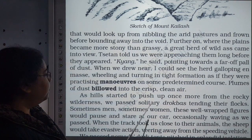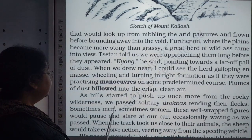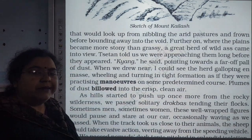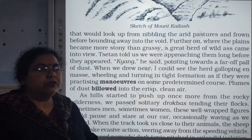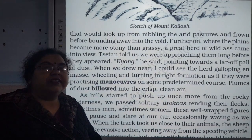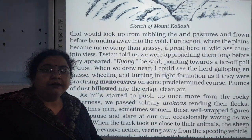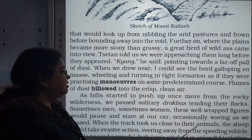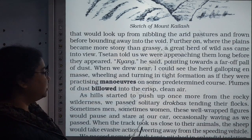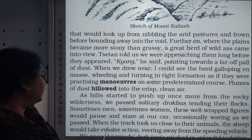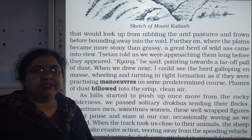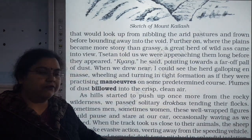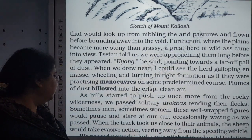As hills started to push up once more from the rocky wilderness, they passed solitary Drogbas tending their flocks. Drogbas are basically tribal people who keep large herds — like what we call charvahas. Sometimes men, sometimes women, these well-wrapped figures would pause and stare at their car, occasionally waving as they passed.